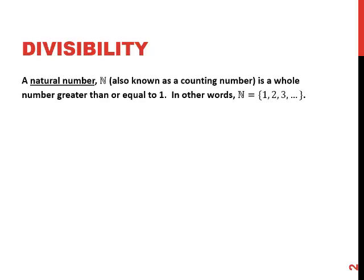To discuss divisibility, we need to talk about a certain set of numbers, the natural numbers. They're also known as the counting numbers. These are whole numbers that are greater than or equal to 1. In other words, the natural numbers denoted by this funny looking N are 1, 2, 3, 10, 15, 1 million - all of the whole numbers that are bigger than 1.